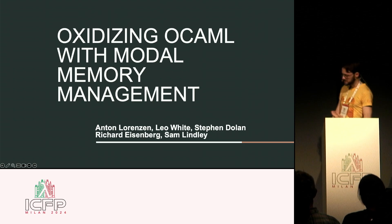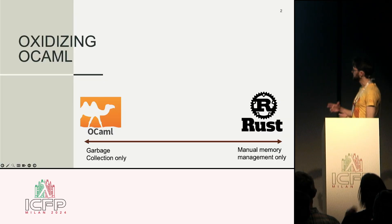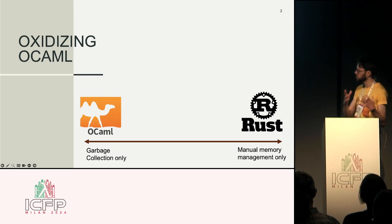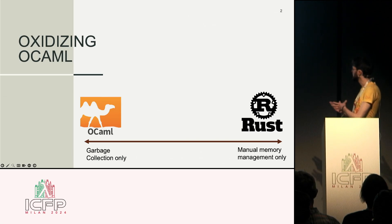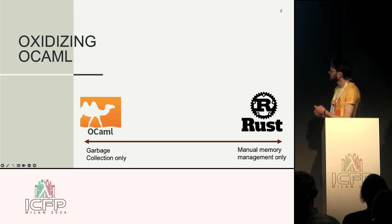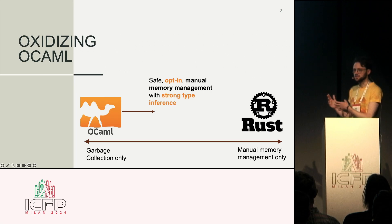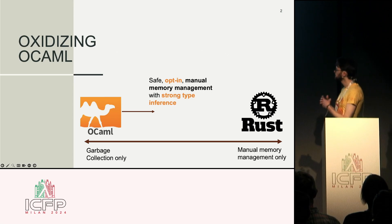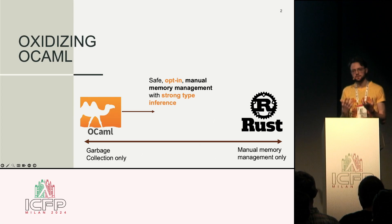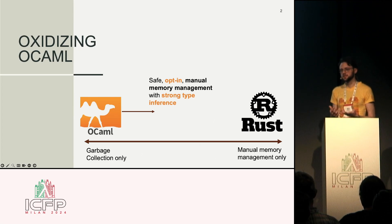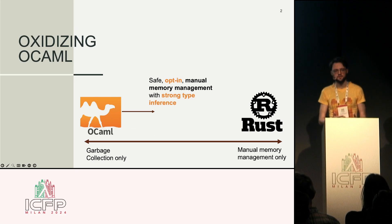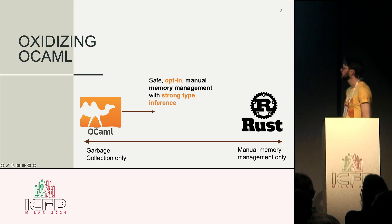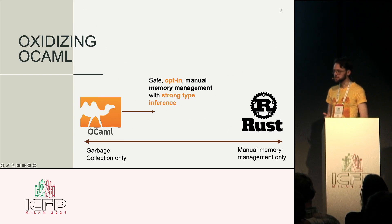What is this whole oxidizing OCaml business? The idea is that you can think of a scale where you have OCaml on one hand with only garbage collection, and on the other side Rust with only manual memory management. We want to move OCaml a little bit in the direction of Rust — not all the way — but get some capabilities for manual memory management while preserving the spirit of the language, which means it should be opt-in, all existing OCaml code should continue to work, and it should have strong type inference so that it's ergonomic to use.